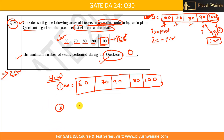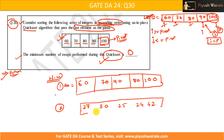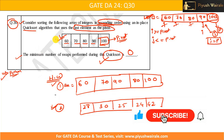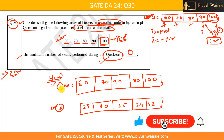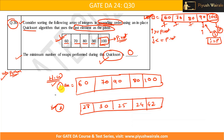Homework question two: the array is [28, 30, 25, 24, 42] — five elements. Again, apply quicksort and find the minimum number of swaps performed to sort this array. Please comment your answers below for both homework questions and I will reply. That's it for this video — thank you!